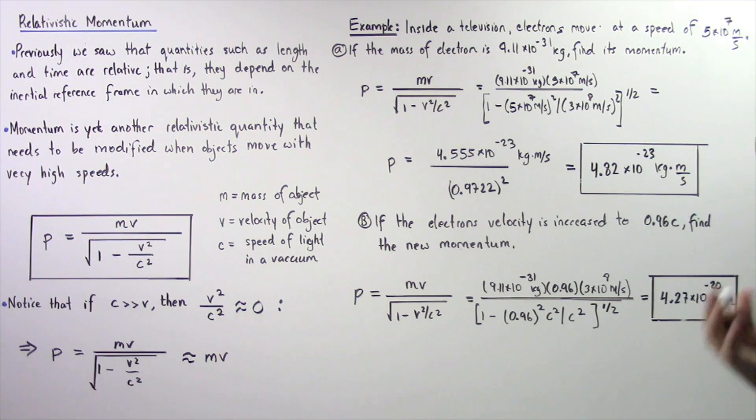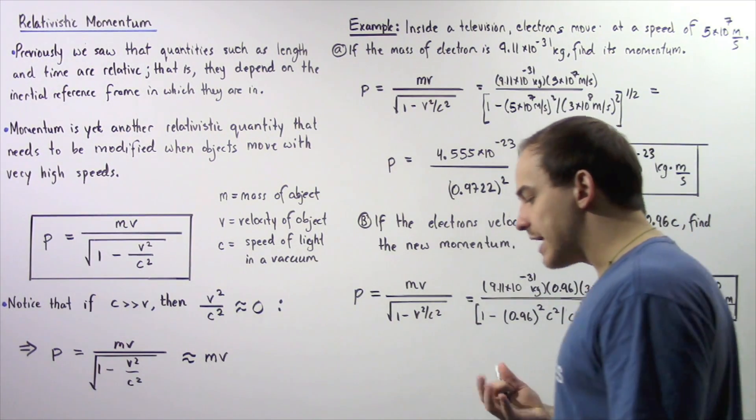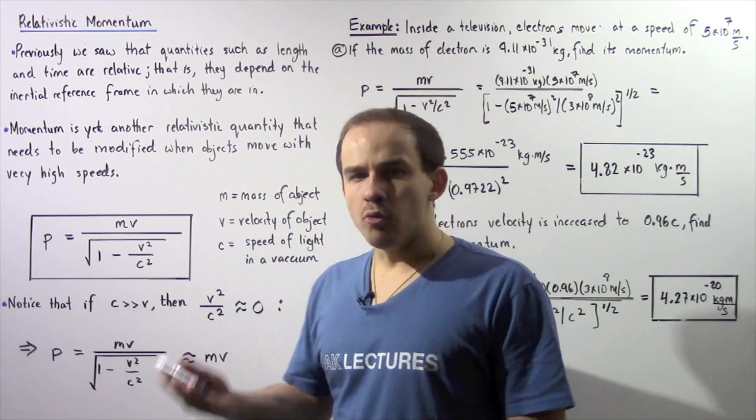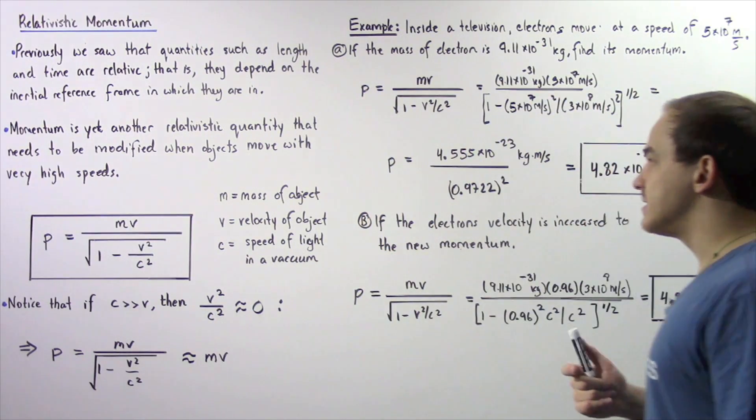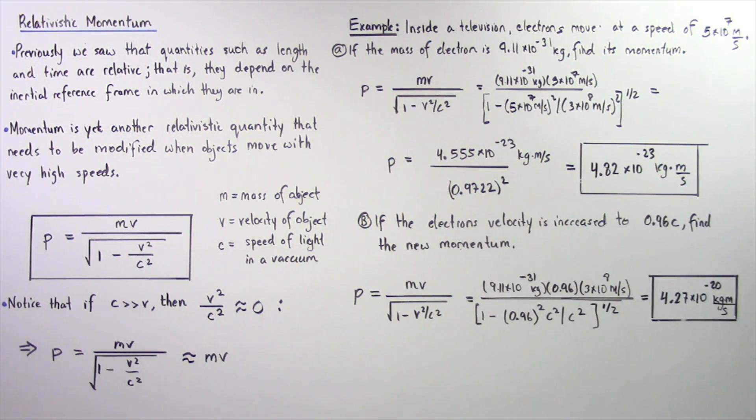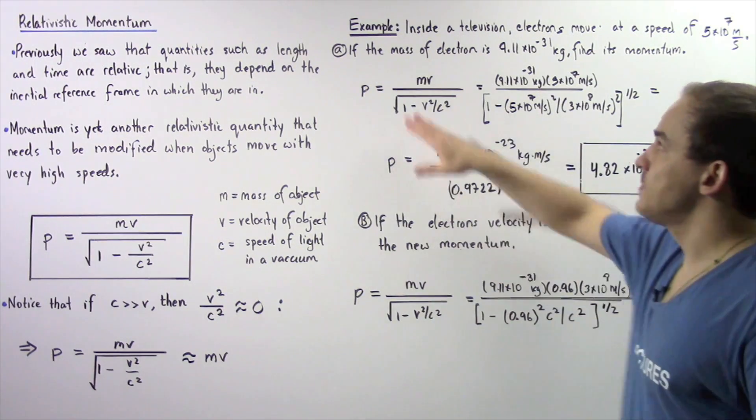Inside a television set, we have electrons that are moving with very high velocities, about 5 times 10 to the 7 meters per second. In part a, if the mass of the electron is given.